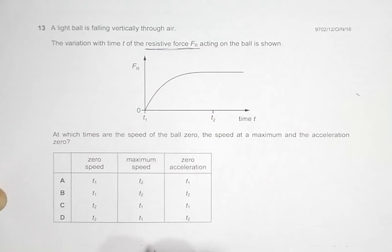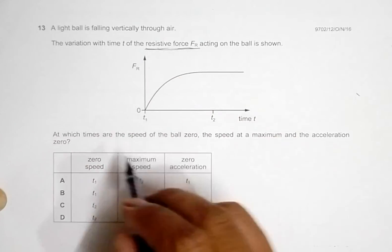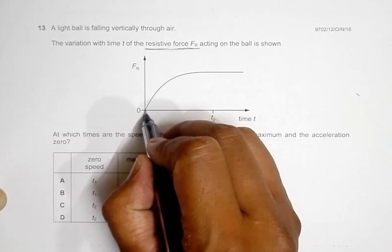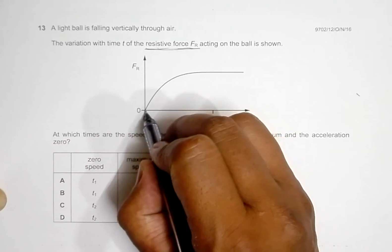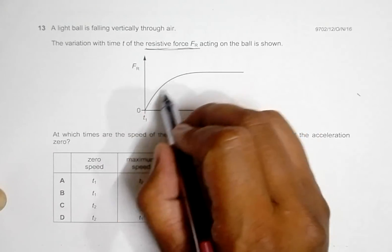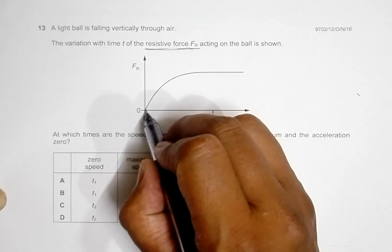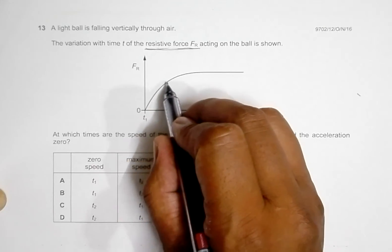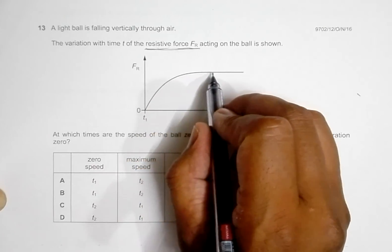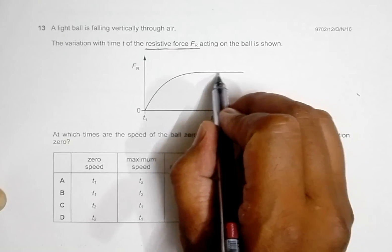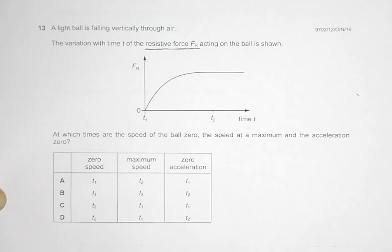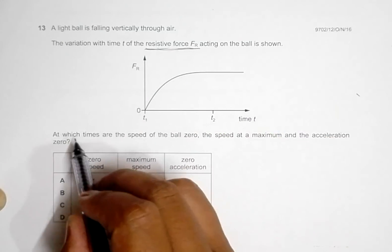So the nature of the graph is that initially FR equals zero. It increases, but looking at how the slope decreases, we can say that the rate of change of FR decreases. Ultimately, FR is maximum and at that time it is constant as well.